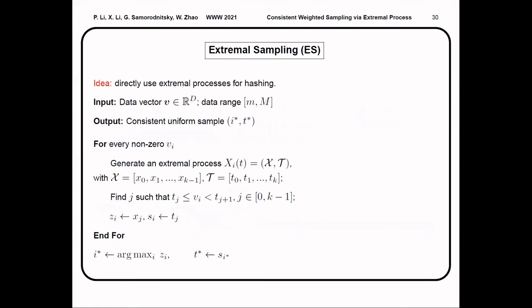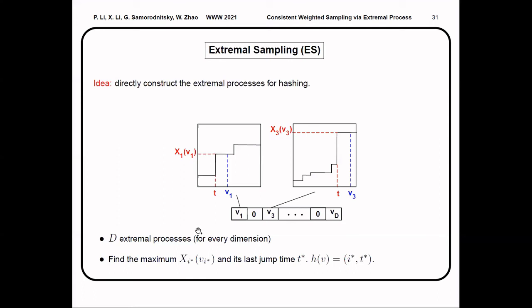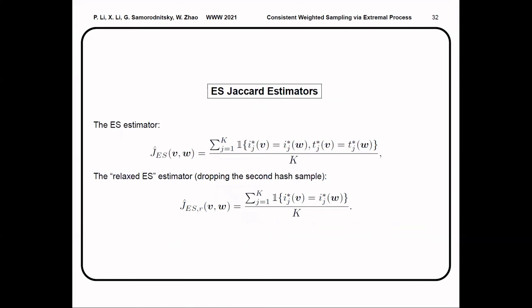In practice, we can simulate extremal processes using this algorithm. And once we have the simulated processes, we can use them to design a hashing algorithm. We call it extremal sampling. The output is also a two-dimensional tuple consisting of i* and t*. But the idea is that for each data dimension, we generate an extremal process. We have x_1 to x_d, d extremal processes. And then we find the maximum of x_i times v_i and set the index as the i*. And we set the second hash sample t* as its last-arrival time.